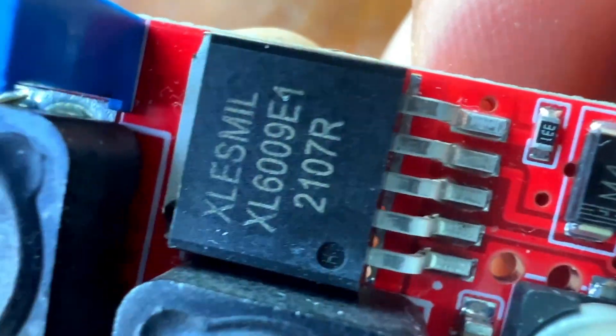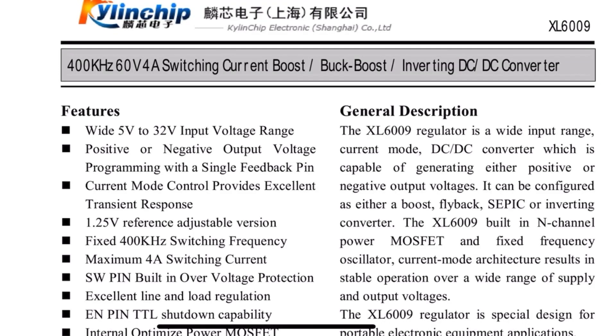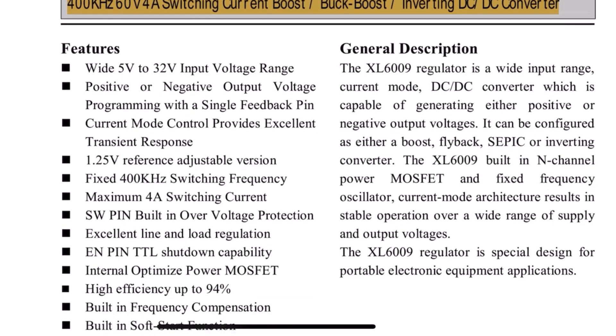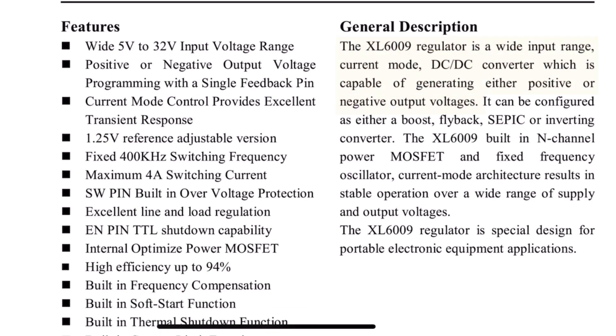XL50 naameya regulator eka switching current boost bugboost inverting ha DC to DC converter eka. DC to DC converter in valladhi positive ha negative output voltages generate kiriyamanda sahha built-in n-channel power MOSFET ha fixed frequency oscillator thibandani sa stable output voltage kaak me regulator ekaan labaaganda pulluwa. Ewaagame XL50 naameya regulator eka visheshemma nirmane karla tiyanne portable electronic equipments walata baavitaa kiriima sandhaa.